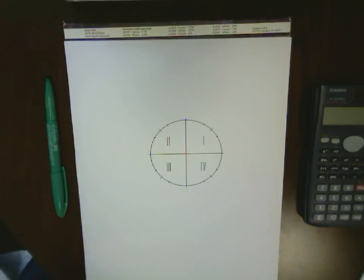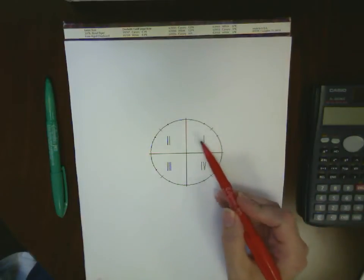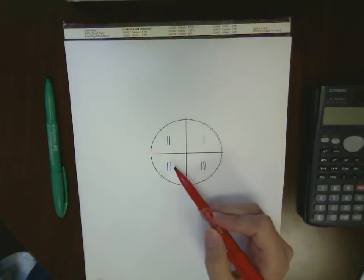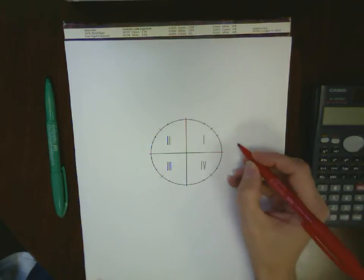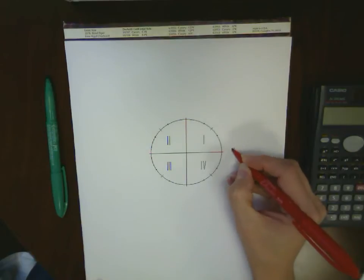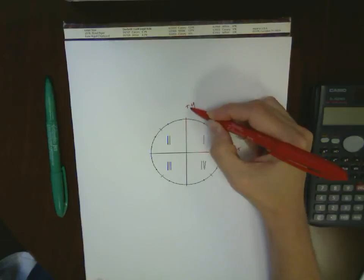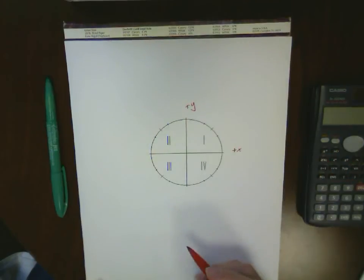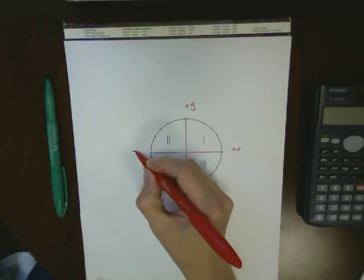Let's talk about the quadrants in a circle. Typically we divide the circle up into four quadrants: the first quadrant, the second quadrant, the third quadrant, and the fourth quadrant. The first quadrant goes from values between the positive x-axis and the positive y-axis. The second quadrant goes from the positive y-axis down to the negative x-axis.